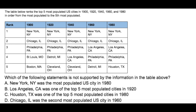The table below ranks the top five most populated U.S. cities in 1900, 1920, 1940, 1960, and 1980, in order from the most populated to the fifth most populated. We see the table right here, and the question asks: which of the following statements is not supported by the information in the table above?